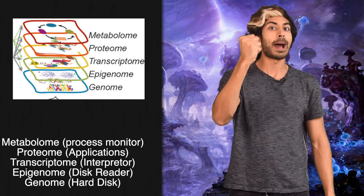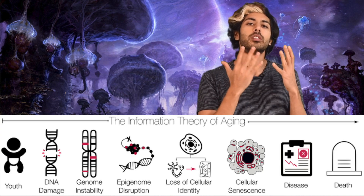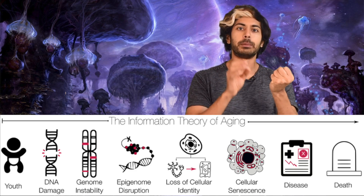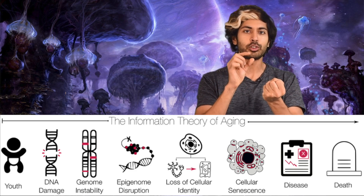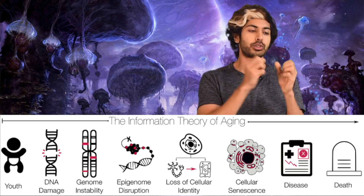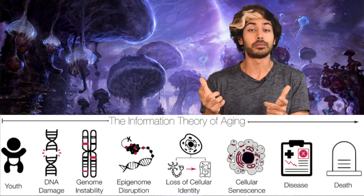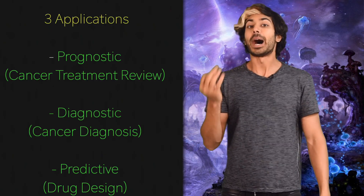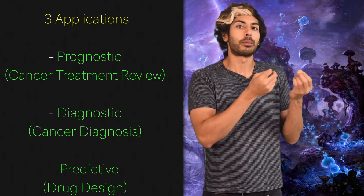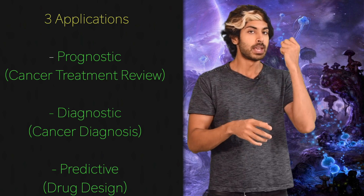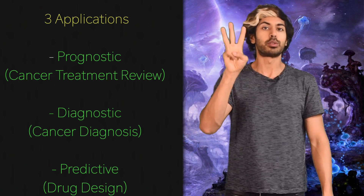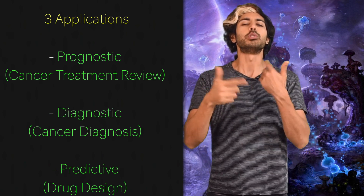Aging is the loss of information over time. The hard disk — the genome — gets scratched. But by studying all the omics layers, we can understand the flow of information more accurately and eventually learn how to preserve and restore this information, effectively reversing the aging process. Biomarkers play a significant role in planning preventative measures and decisions for patients that can be classified as either diagnostic, prognostic, or predictive. So let's dive into three different real-world use cases.